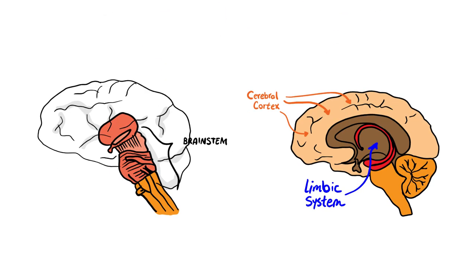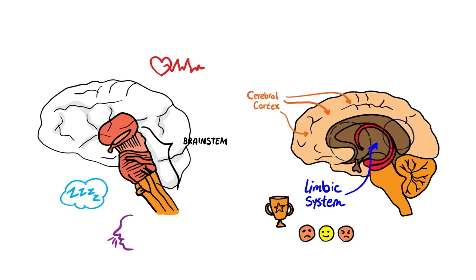The brain stem controls life-sustaining functions, including sleeping, breathing, and heart rate, while the limbic system holds the brain's reward circuitry and helps to control emotions and the ability to feel happiness.